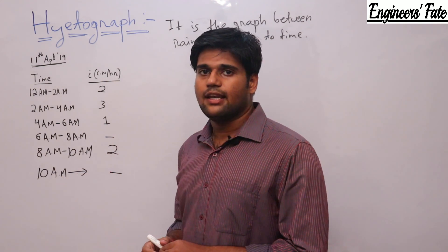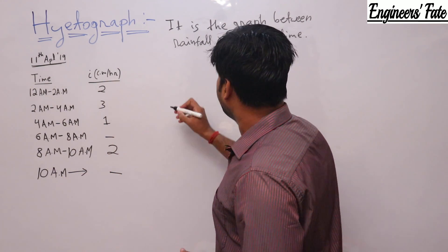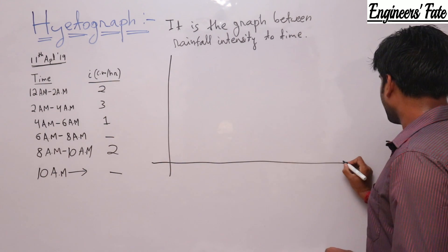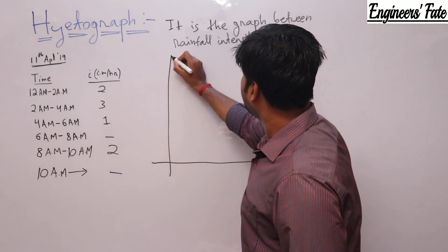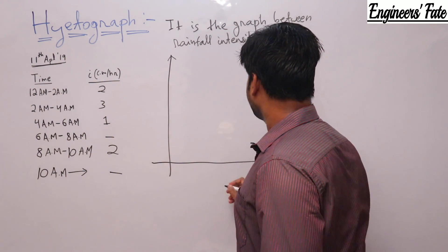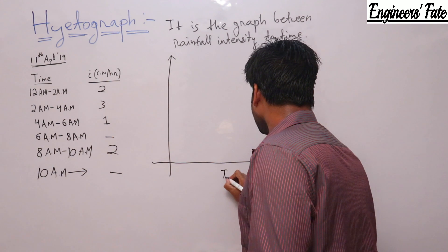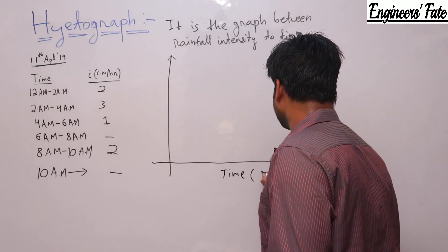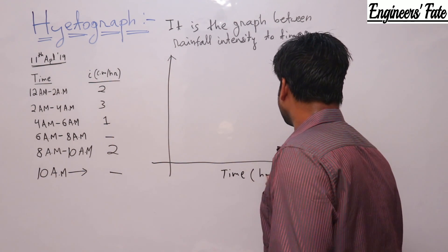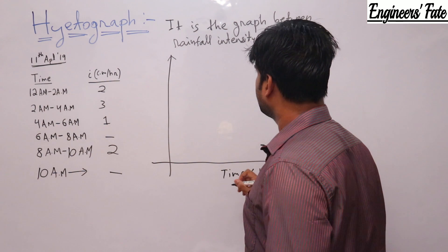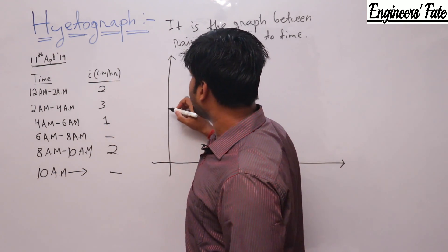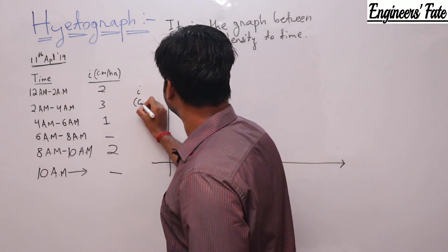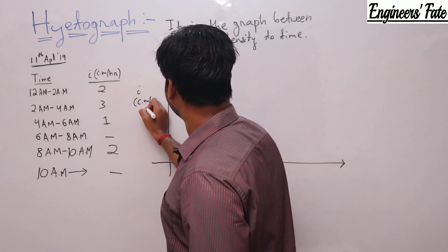To plot a hyetograph, I take time on the x-axis in hours, and in the y-axis I take the intensity value in centimeters per hour.